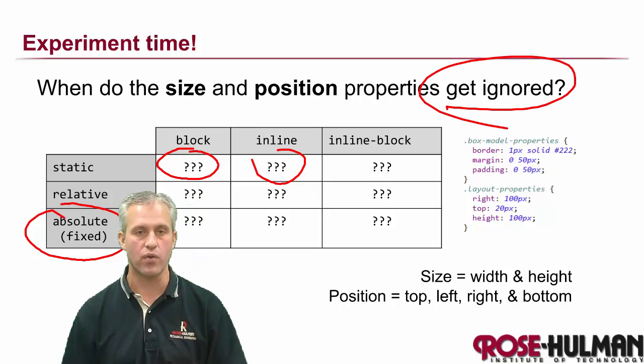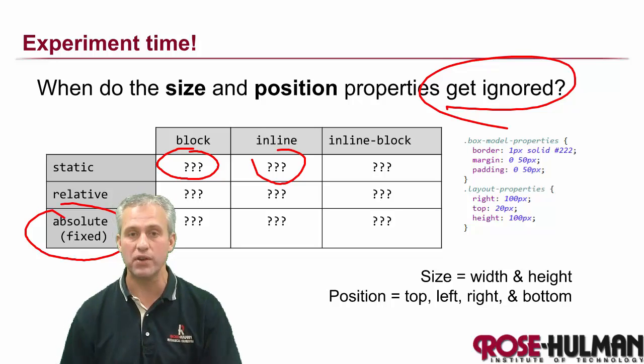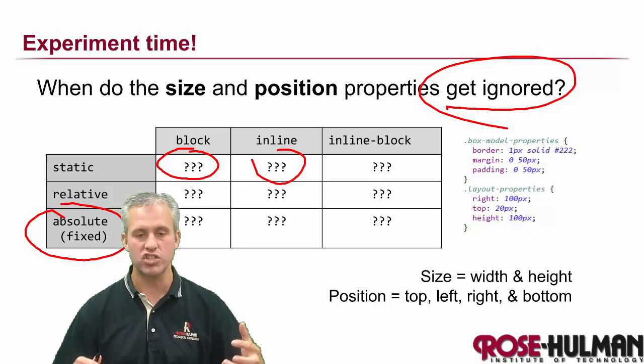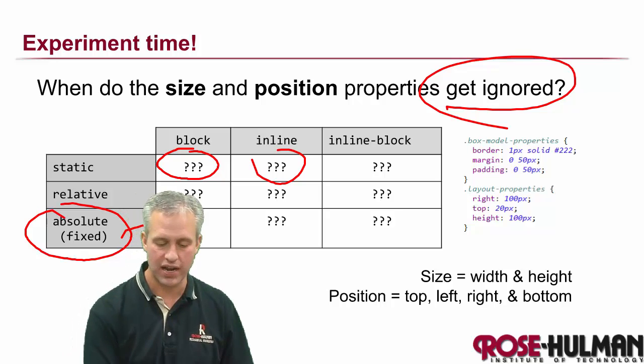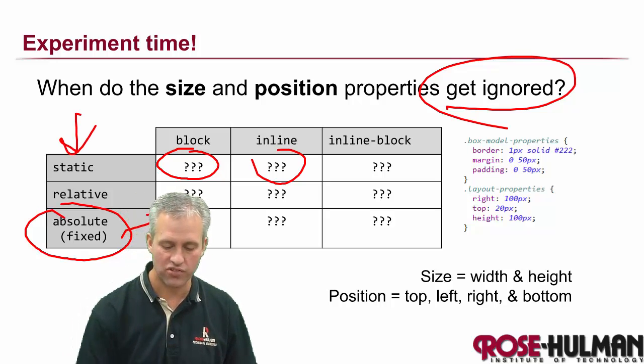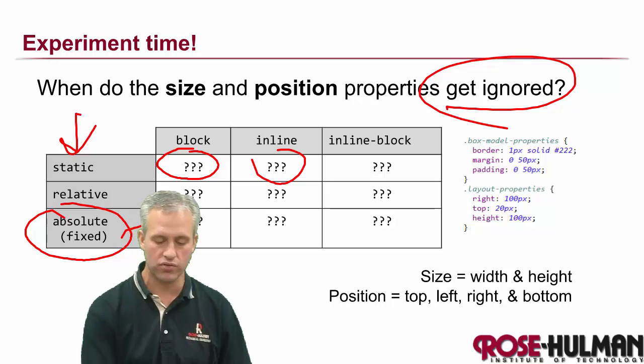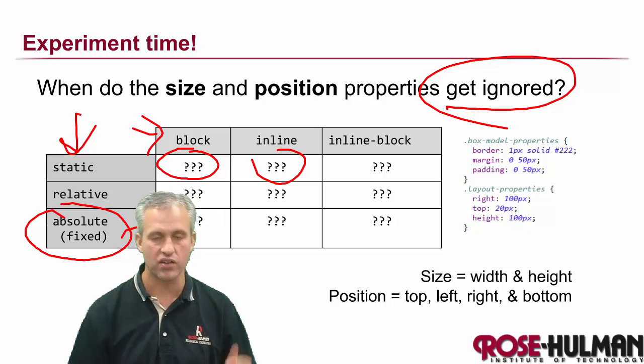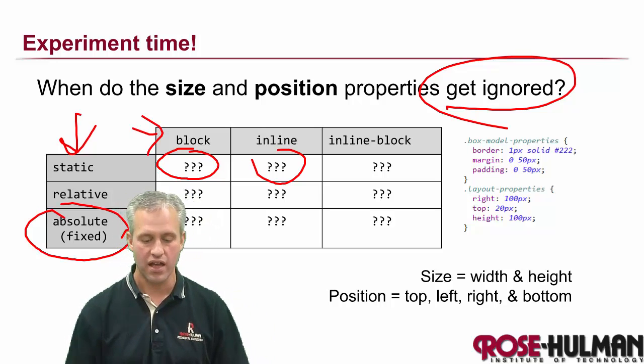And the goal is just to look at each of these, see what it does. And specifically what I'm curious about is who gets ignored. I wanted to make an experiment where we make the same page nine times. And the only thing we change is whether the position is static, relative, or absolute, and then whether the display is block, inline, or inline block, and see what happens.